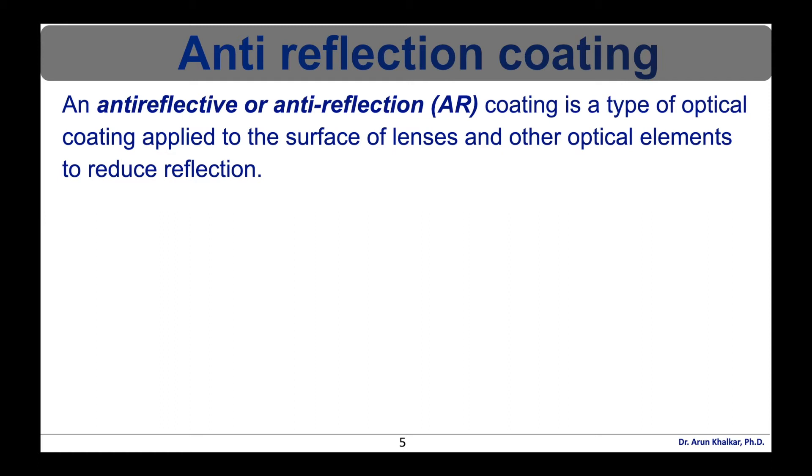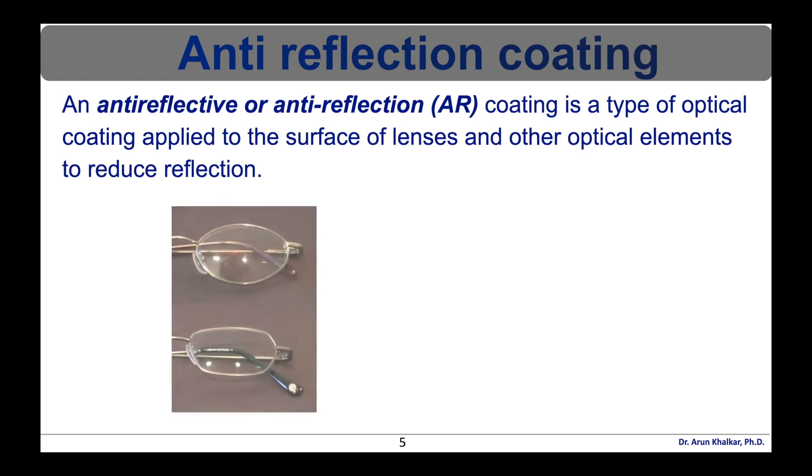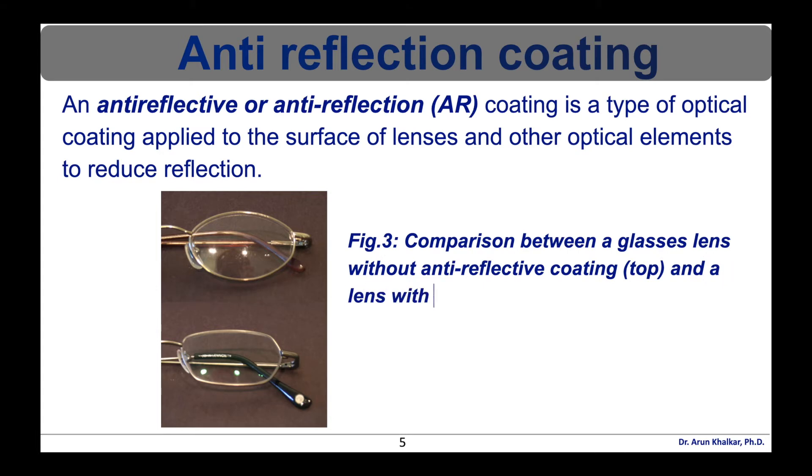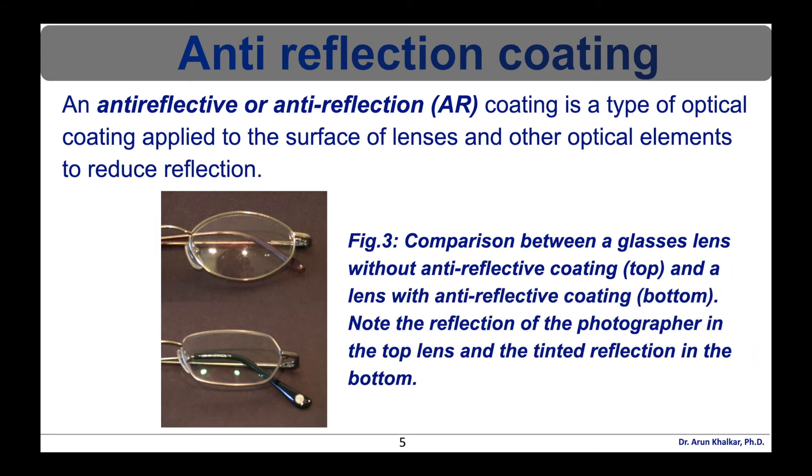In other applications, the primary benefit is the illumination of the reflection itself such as a coating on eyeglass lenses that makes the eyes more visible to others. The comparison between glasses lens without anti-reflective coatings and the lens with anti-reflective coatings is shown in this diagram. Note the reflection of the photographer in the top lens and the tinted reflection in the bottom.